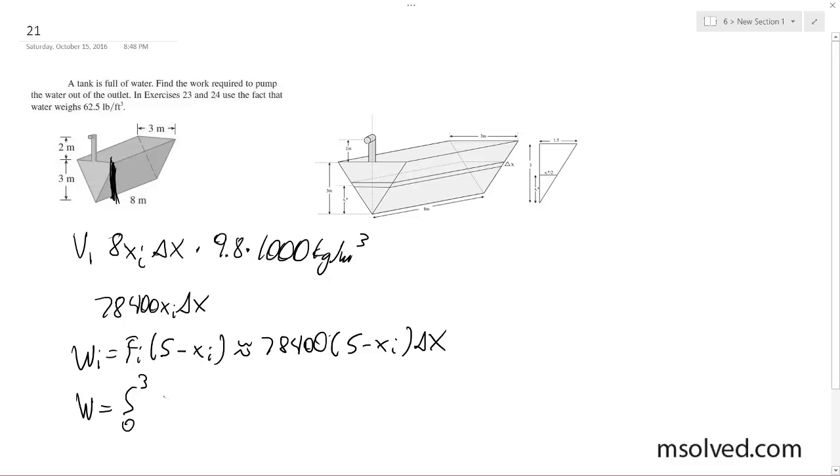So it's going to be 78,400 times (5 - x), this should be x here, delta x.